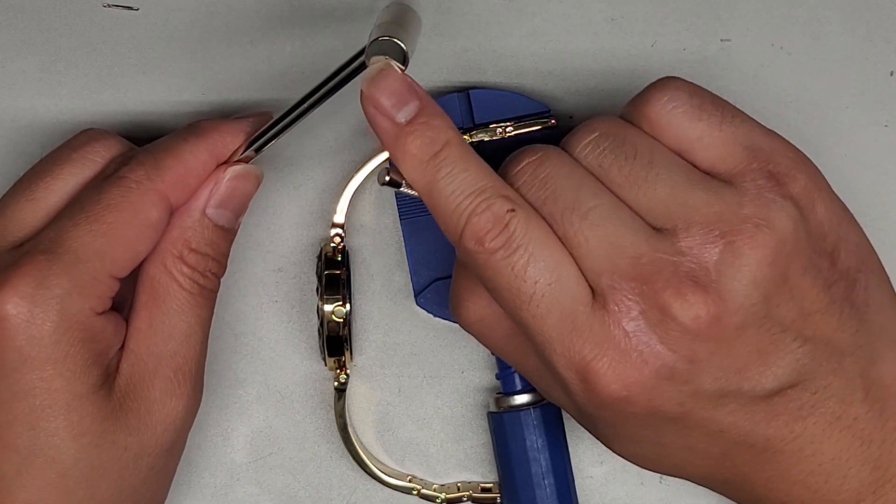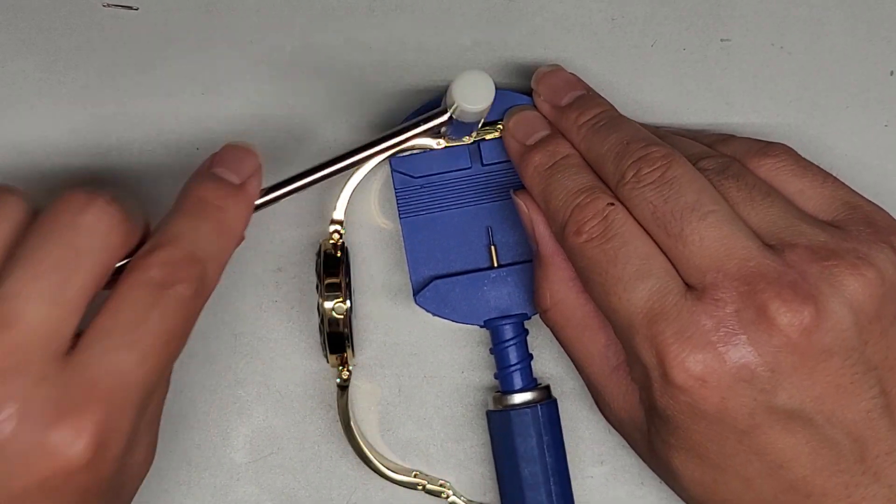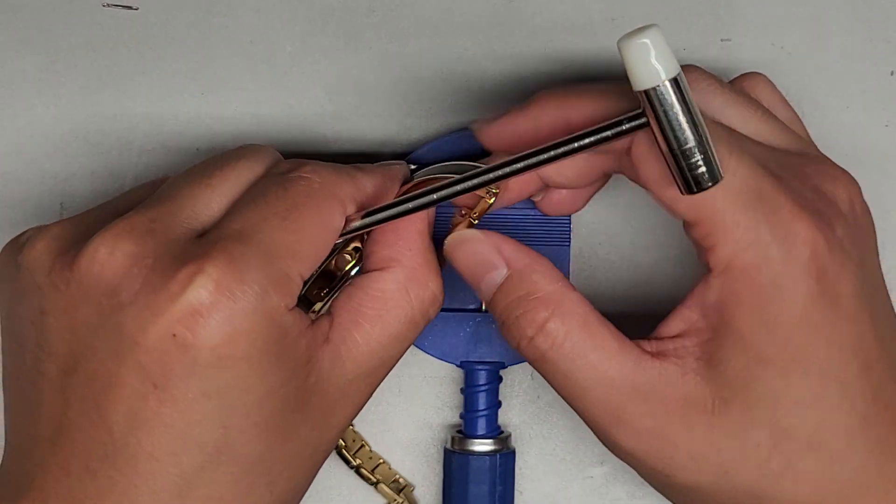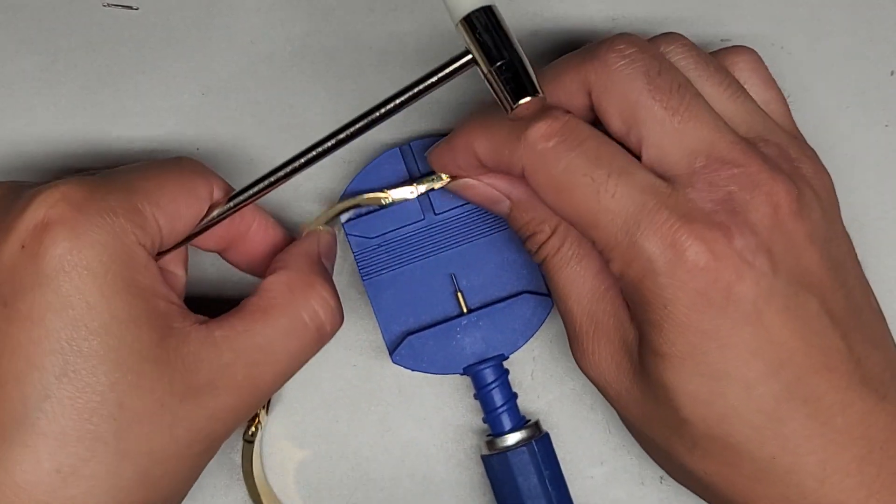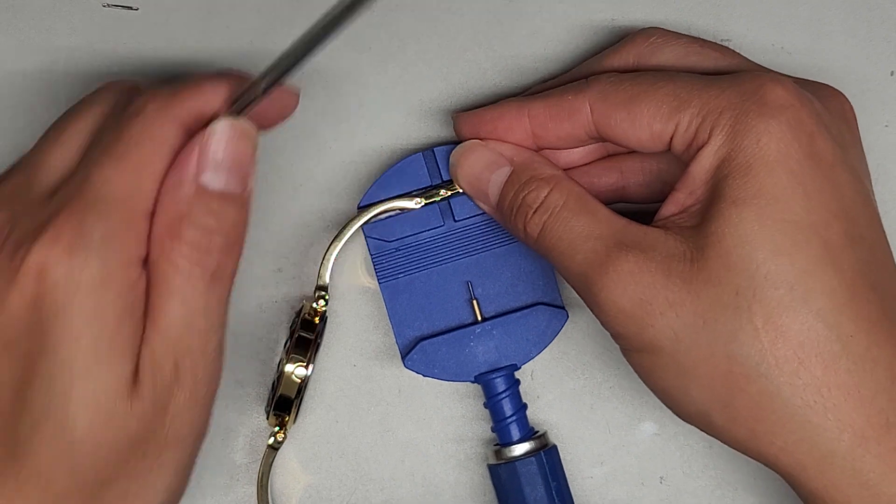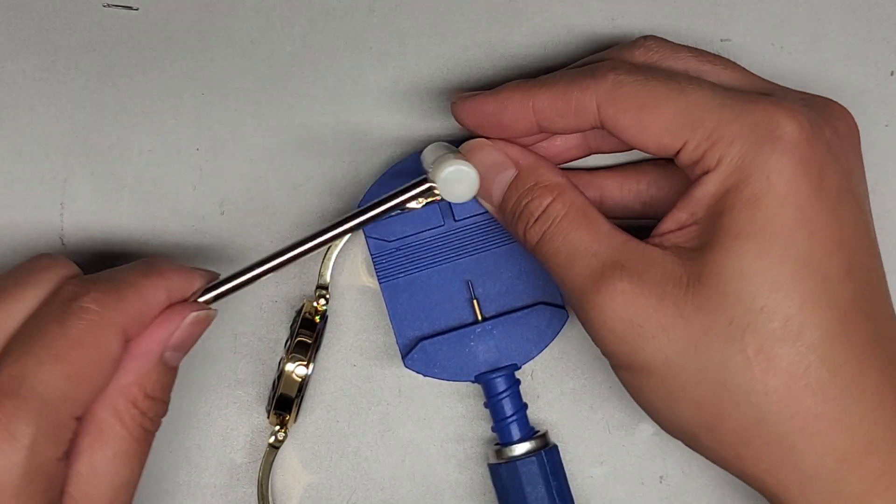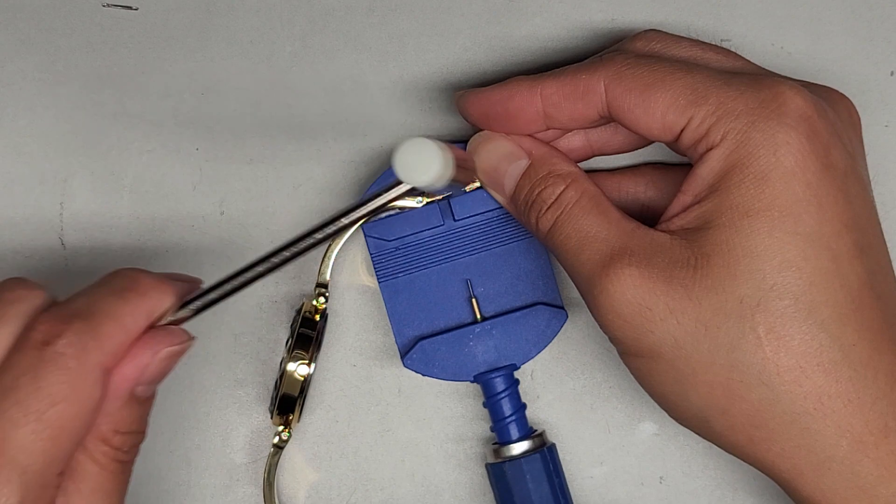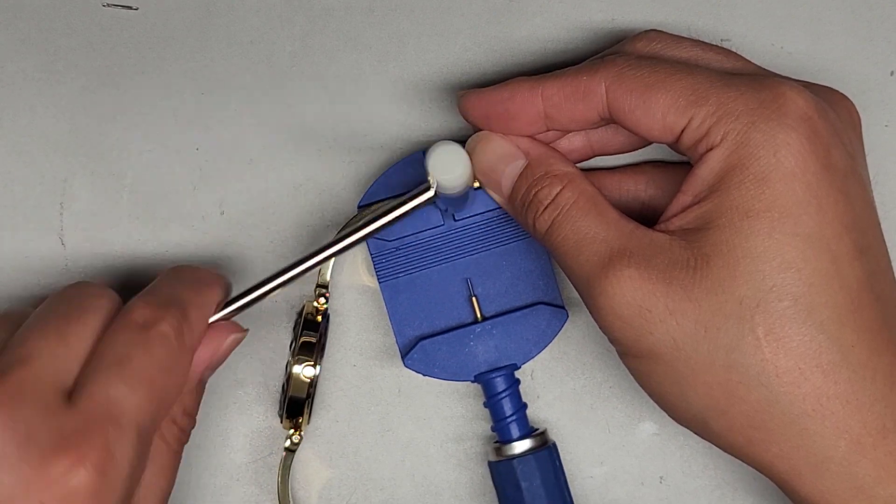Or since this has this flat piece, you can just try and knock it in that way. And let's see, it's not quite going in. I don't know if this nylon one, I think it'll just get destroyed. So we'll just push that in.